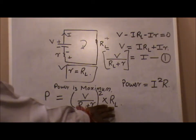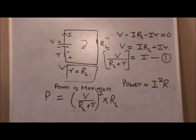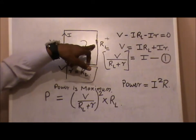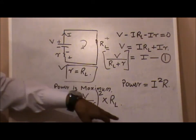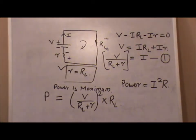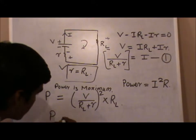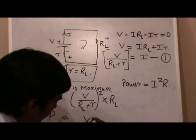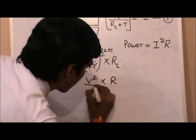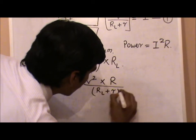The reason I mention R as RL is because we want to take note of the power delivered to the load resistance, not the internal resistance. So we consider the resistance across which we calculate the power. We get: P equals V squared times RL, upon (RL plus r) whole squared.